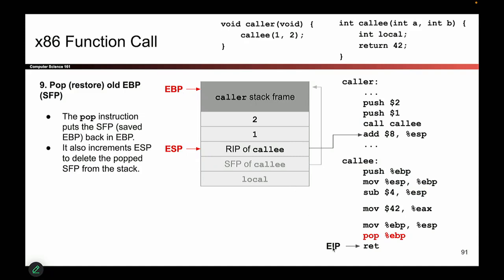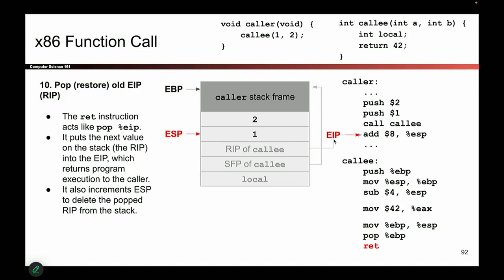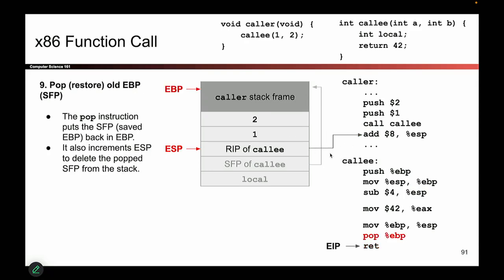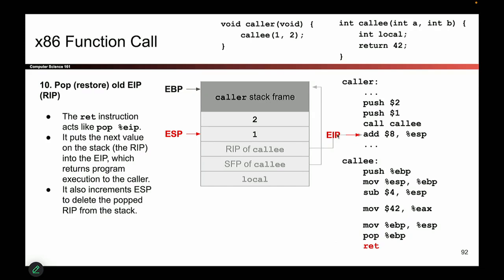Now I just have to get EIP back in its original place — the instruction pointer. Where was the original place? I wrote it down: it's right there on the stack. This is the original value of EIP before I overwrote it. So all I have to do is pop this value off the stack, copy the bits into the EIP register, and that puts EIP back where it's supposed to go. You see how those bits pointed back into the caller? When I put those bits back in EIP, EIP points back there too.